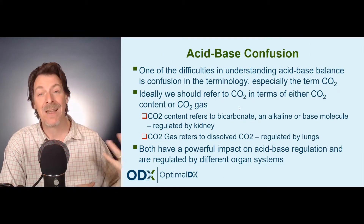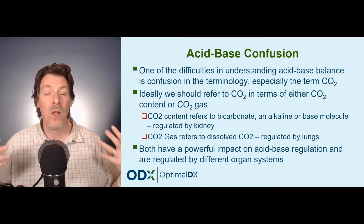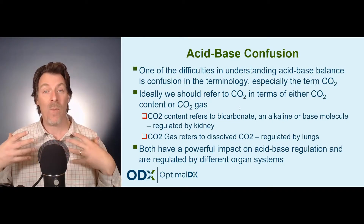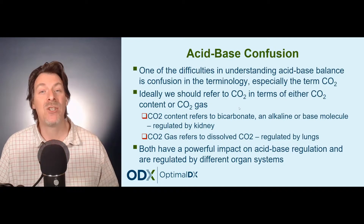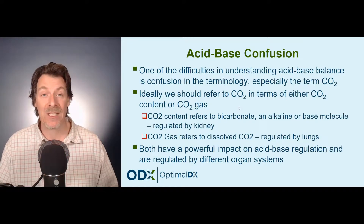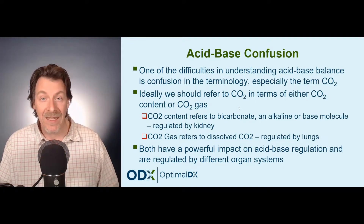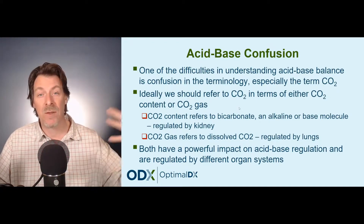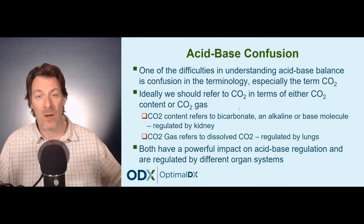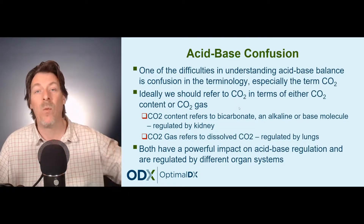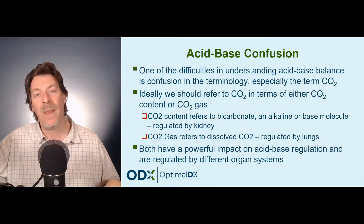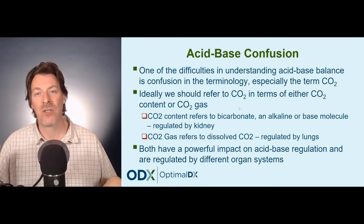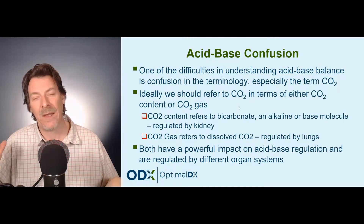Both the kidneys and the lungs have powerful regulatory capacities in the body. When we're looking at the two major systems that regulate pH and acid-base balance, we've got the kidneys and we've got the lungs. We've got metabolic acidosis and metabolic alkalosis, having more to do with kidney or renal regulation, and then respiratory acidosis and respiratory alkalosis having to do with the lungs.